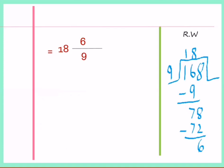Okay students, you can see 6 and 9. Both numbers can be divisible by 3. So we will reduce these two numbers by 3. Now, 3 twos are 6 and 3 threes are 9. So 18 and 2/3 is the answer of part I. Now draw a finishing line.